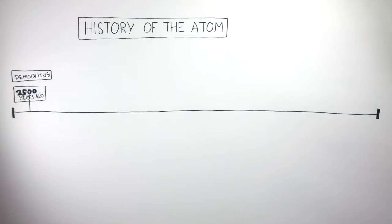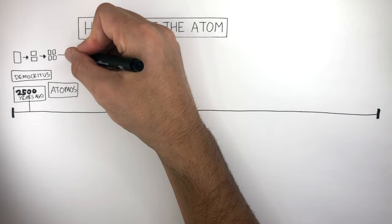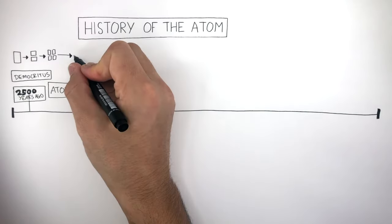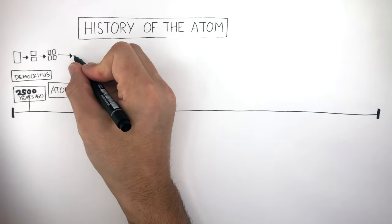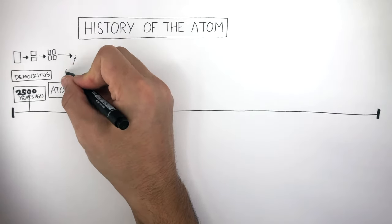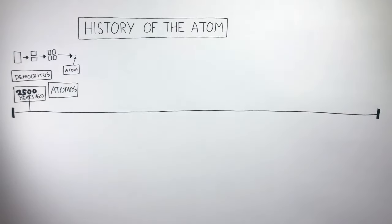Democritus came up with the term Atomos, which means atom in ancient Greek. Democritus hypothesized if you have a piece of stone and you cut it in half, and then you cut it in half again, and you keep on cutting it in half, eventually you'll get to a point that's so small that is indivisible and you can no longer cut it in half. He termed this the atom, or in ancient Greek, Atomos.